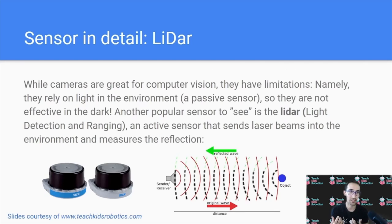Switching from digital cameras to another sensor, the lidar, we can go and investigate another way robots are able to see the world around them. While cameras are great for computer vision, they have a key limitation, which is that they rely on light and the environment, since they're a passive sensor. This can be problematic if you're operating at night or in low light environments.